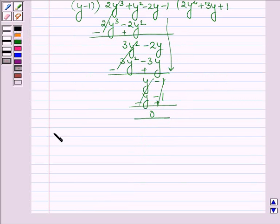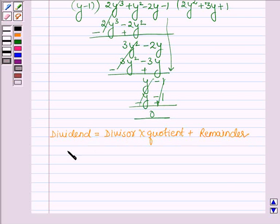Now as we know the dividend equals divisor times quotient plus remainder. So we have p(y) equals the divisor which is (y-1) times the quotient which is 2y² + 3y + 1 plus 0.